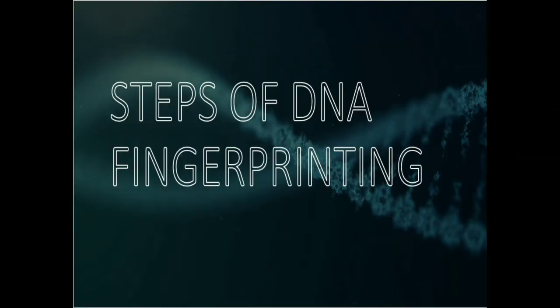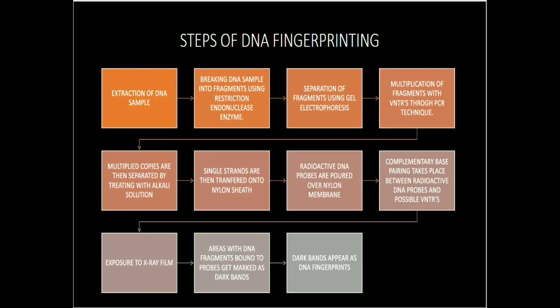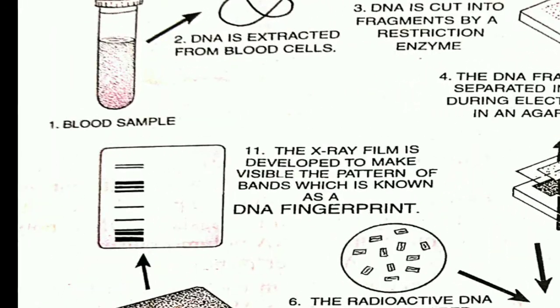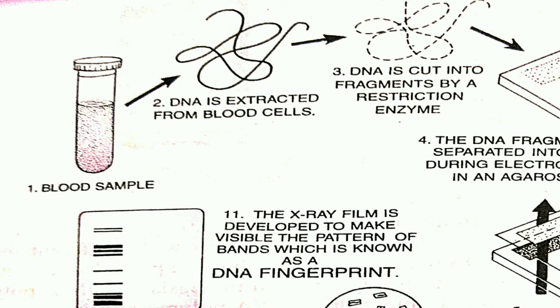Now we will discuss the steps of DNA fingerprinting in detail. The very first step is extraction of the DNA sample. We need a DNA sample from the individual being studied. This can come from a blood sample — particularly the nuclei of WBCs — from spermatozoa nuclei, or from follicle cells clinging to hair roots.